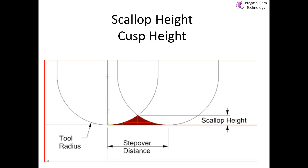This scallop height determines the surface finish. How much you reduce the scallop height, that much you will get a very good surface finish. How much the curve height is bigger, the surface finish will be rough.